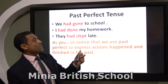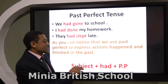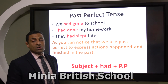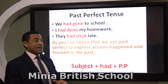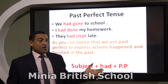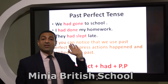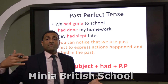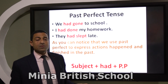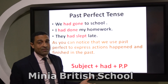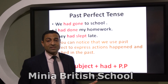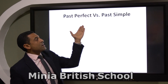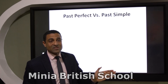Now let's move to the formation of the past perfect tense. We start our sentence with the subject, then use 'had' and the past participle form of the verb. Now an important question: if past perfect gives us the same use as past simple, what's the difference? Why do we have two different tenses to express the same use?